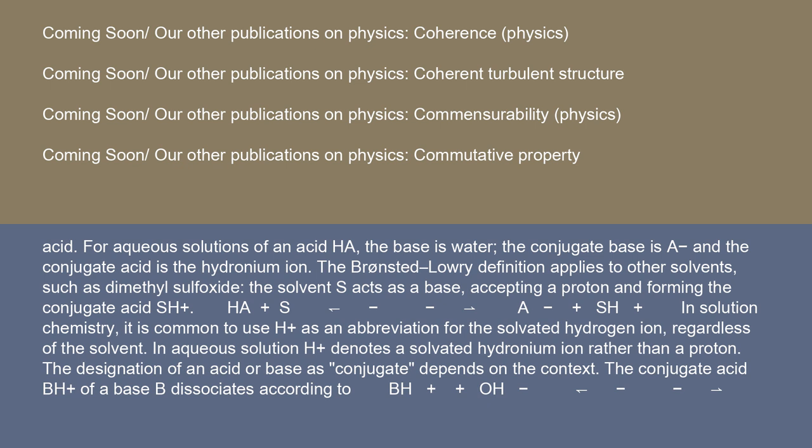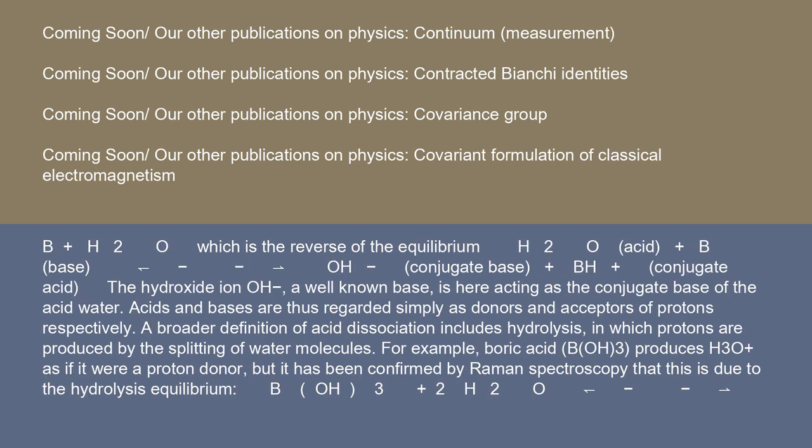The designation of an acid or base as conjugate depends on the context. The conjugate acid BH⁺ of a base B dissociates according to BH⁺ + OH⁻ ⇌ B + H₂O, which is the reverse of the equilibrium H₂O (acid) + B (base) ⇌ OH⁻ (conjugate base) + BH⁺ (conjugate acid). The hydroxide ion OH⁻, a well-known base, is here acting as the conjugate base of the acid water.